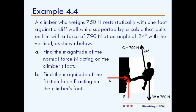In this video we will solve example 4.4. Example 4.4 states a climber who weighs 750 newtons rests statically with one foot against a cliff wall while supported by a cable that pulls on him with a force of 790 newtons at an angle of 24 degrees with the vertical as shown below.